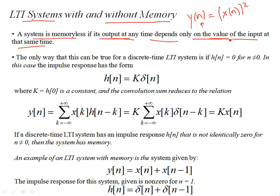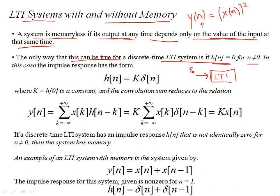If a system requires past outputs, past inputs, or future values of inputs and outputs, then that system has memory. So a memoryless system is one whose output at any time depends only on the value of the input at the same time. For an LTI system, the only way this can be true in terms of impulse response is that h[n] should be 0 for n not equal to 0.